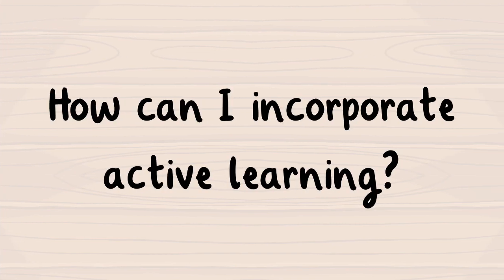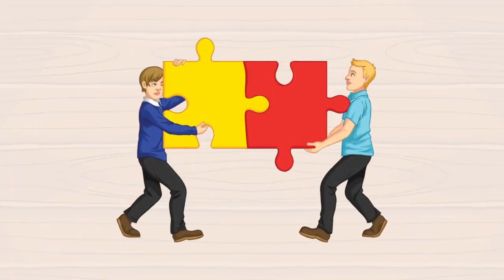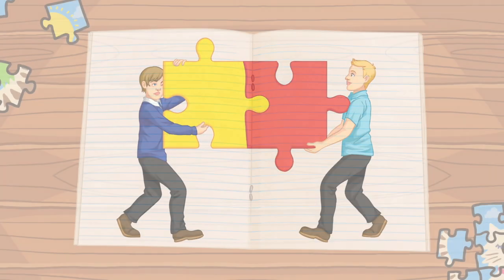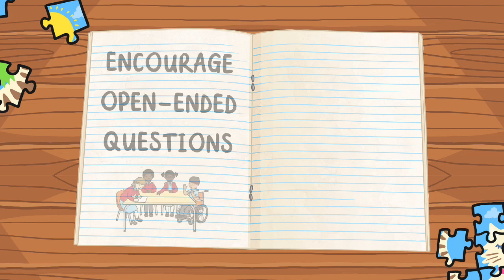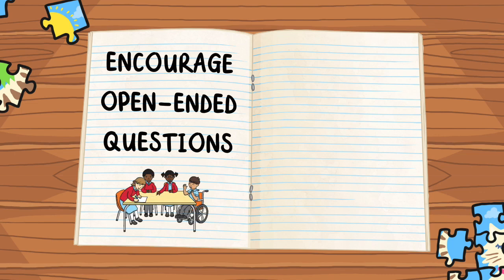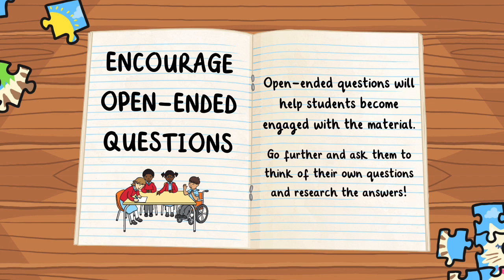How can I incorporate active learning? There are several ways to incorporate active learning in a student's educational experience. Encourage open-ended questions, which will help students become engaged with the material. Go further and ask them to think of their own questions and research the answers.